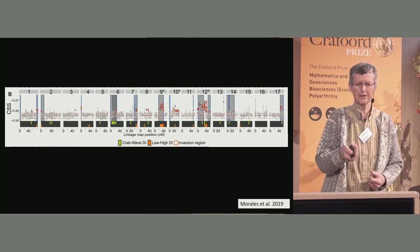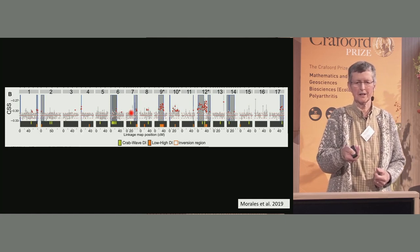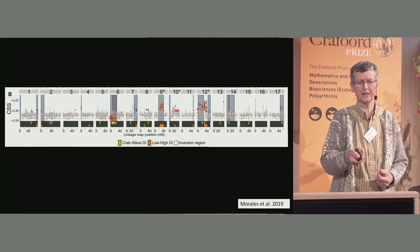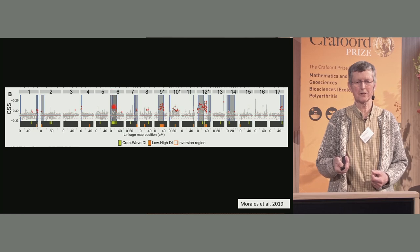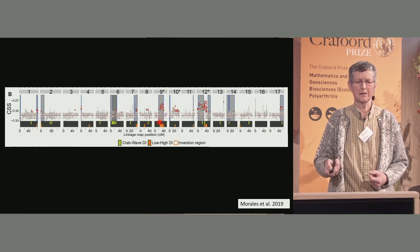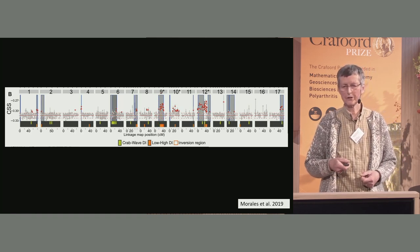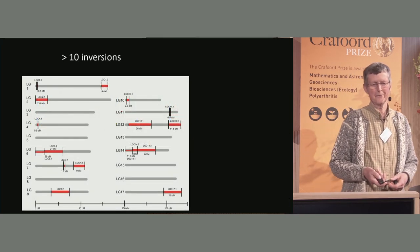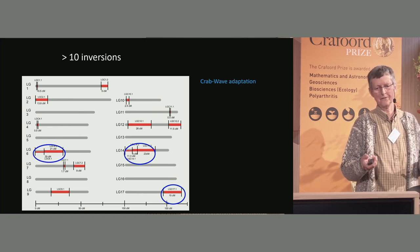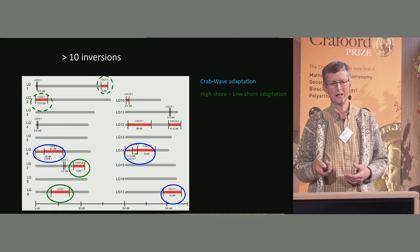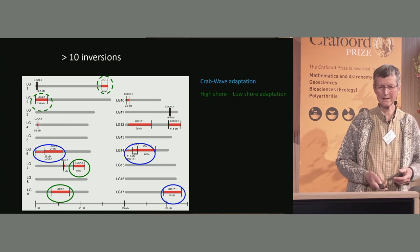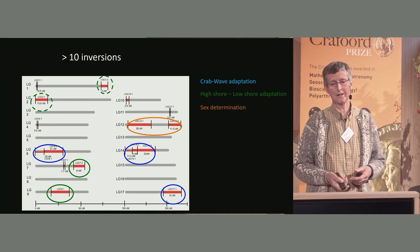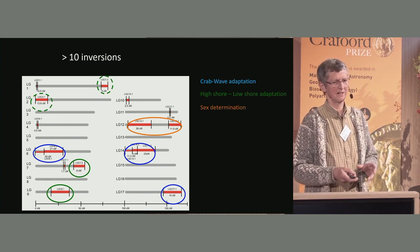Going back to look at the inversions and the SNPs that differentiate the different ecotypes, we had the opportunity to separate the crab-wave dimension from the high-low shore dimension with this pan-European study. Some differences — marked in green — are where SNPs differentiate the crab-wave traits, while orange ones show the low-high shore variation. Some inversions are mainly taking care of the crab-wave adaptation, while others — for example in linkage group 9 — are mainly taking care of the high-low shore variation. And then we also have an inversion that takes care of sex determination. Of course, it's a little bit more complex.